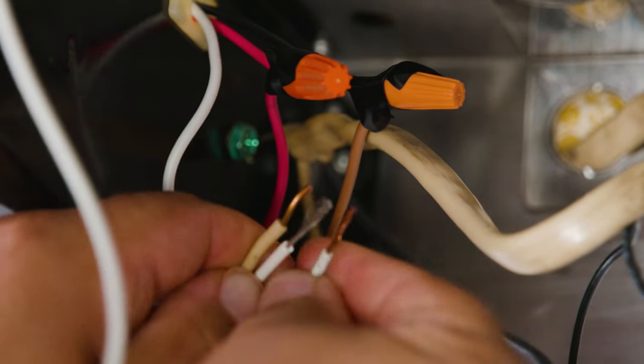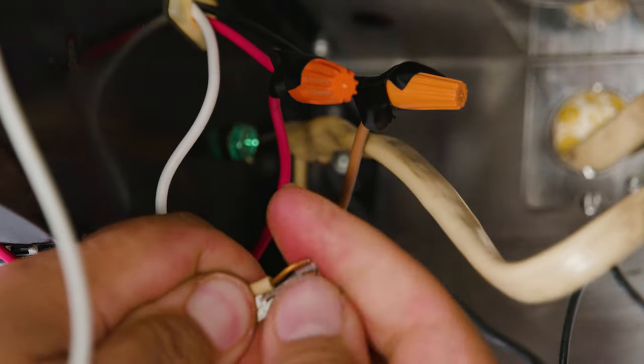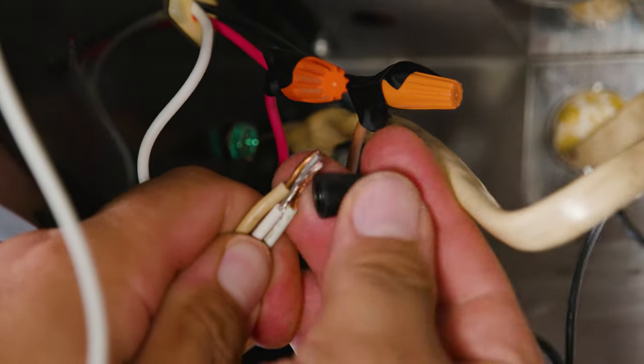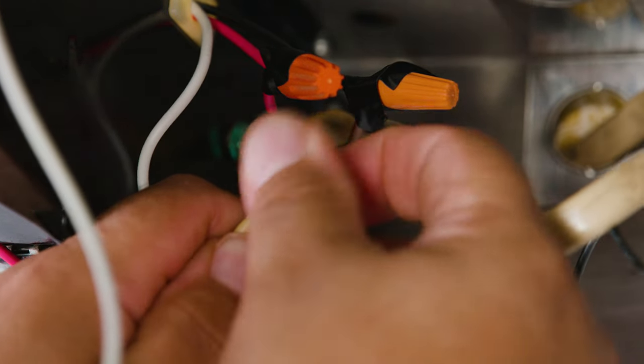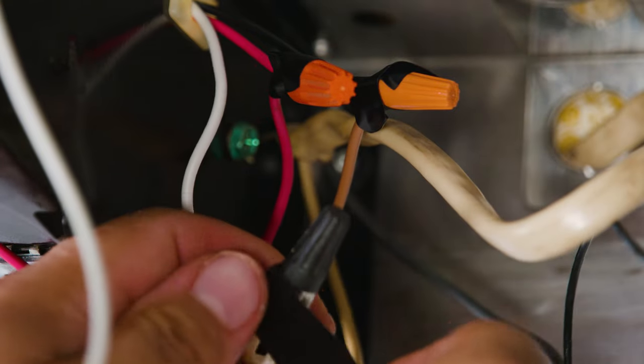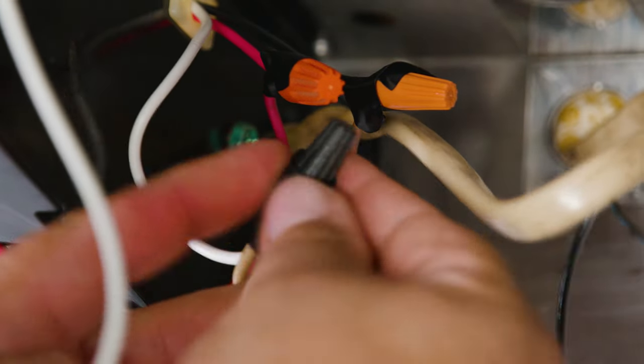So basically, we're gonna take our two white cables, the one from the fan, the one from the light, and the one coming from the wall. We're gonna place them together, twist the cap on until secure and tight, and then place some electrical tape.